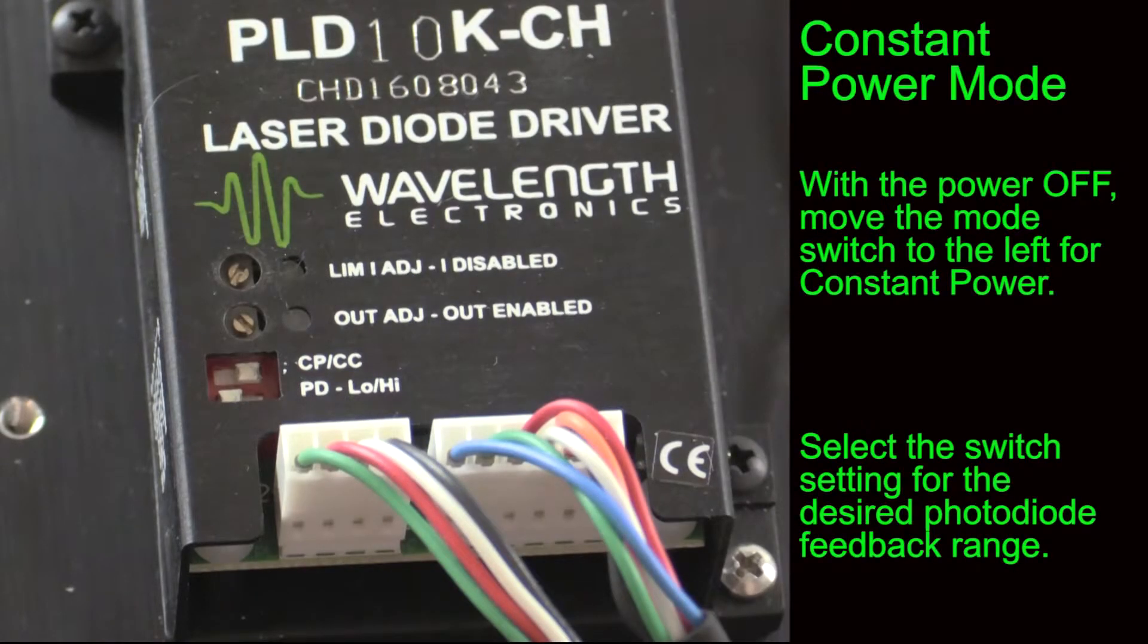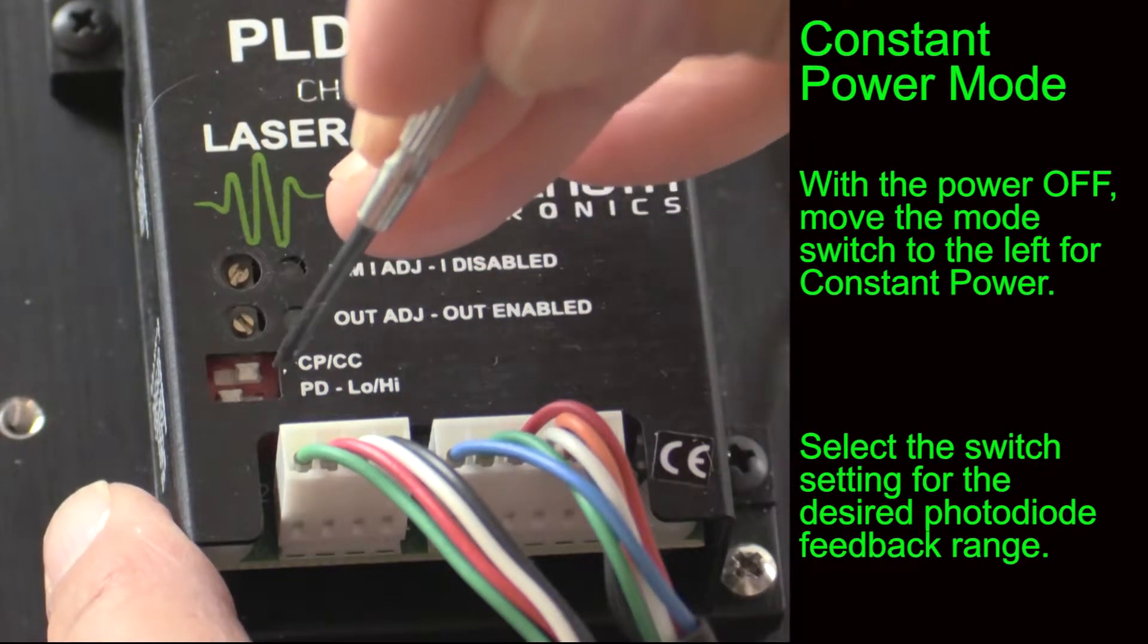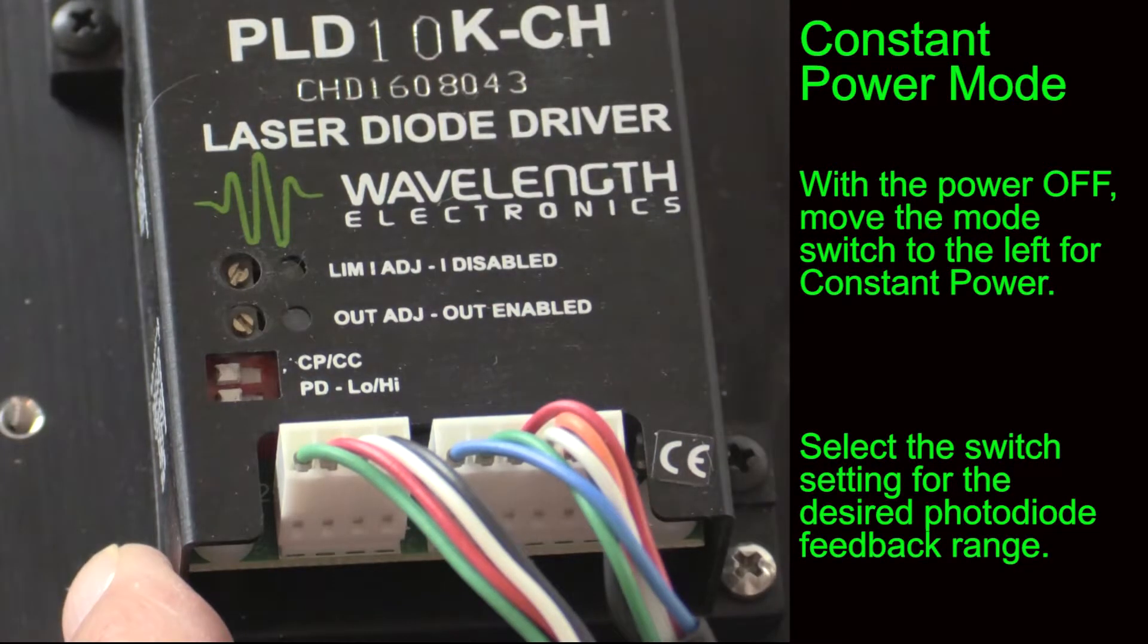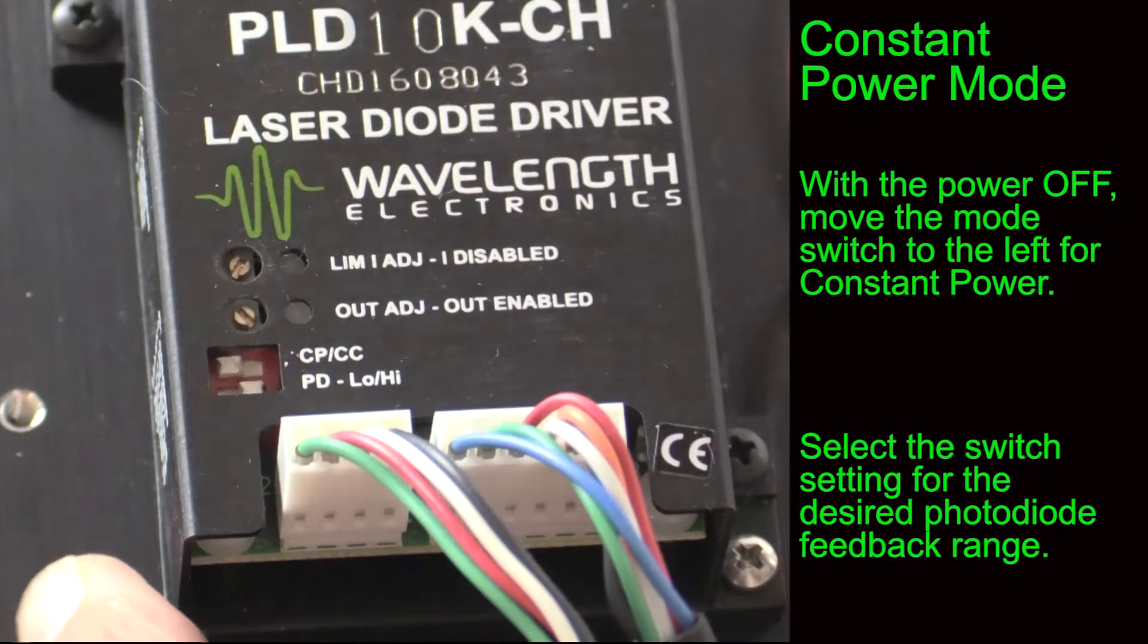Now that we've walked through constant current operation, let's touch on constant power mode. Operationally, you need to move the constant power constant current switch to the left.